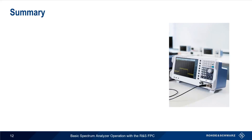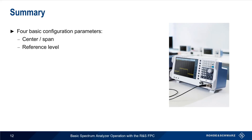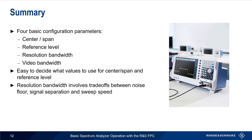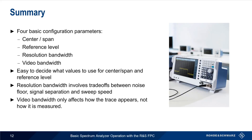In this presentation, we've introduced you to the four most important configuration parameters when using the FPC: center and span, reference level, resolution bandwidth, and video bandwidth. For center, span, and reference level, it's not very hard to decide what values to use. Resolution bandwidth, on the other hand, involves trade-offs between noise floor, signal separation, and sweep speed, so the best resolution bandwidth setting will depend on the application or measurement task. And we saw how video bandwidth affects the appearance of a trace, but doesn't affect how that trace is measured.